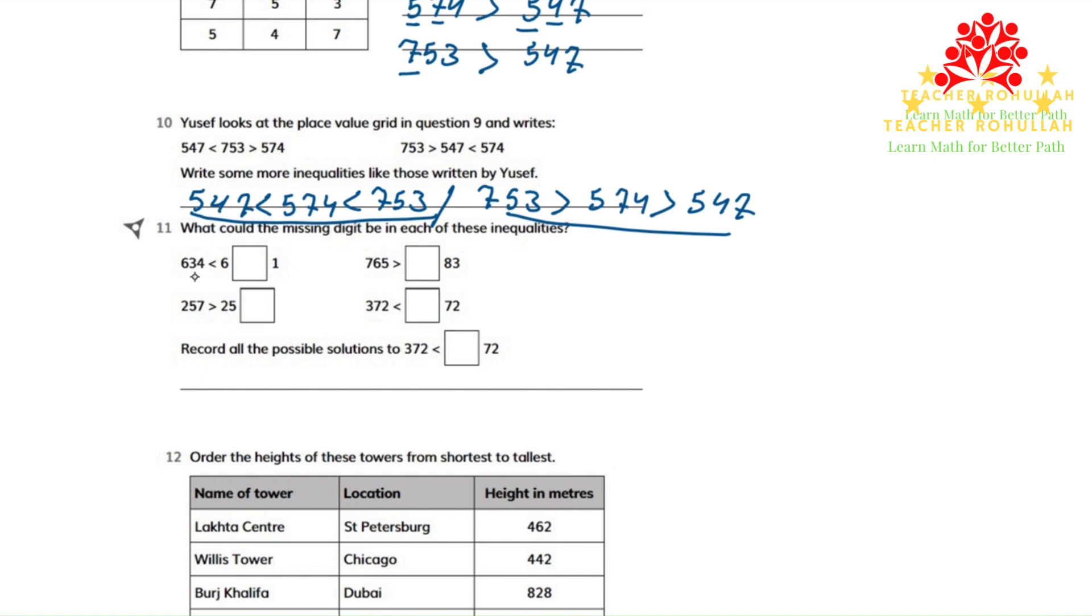So in the first one, the number to the left is 634. What number can we place in the tens place so that this number be bigger than 634? If we write 641, it can be greater than 634.